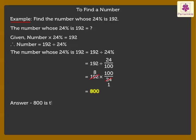Thus, 800 is the number whose 24% is 192. Why not solve a story problem related to this topic?